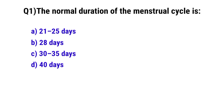Question No. 1: The normal duration of the menstrual cycle is? The correct option is B: 28 days.